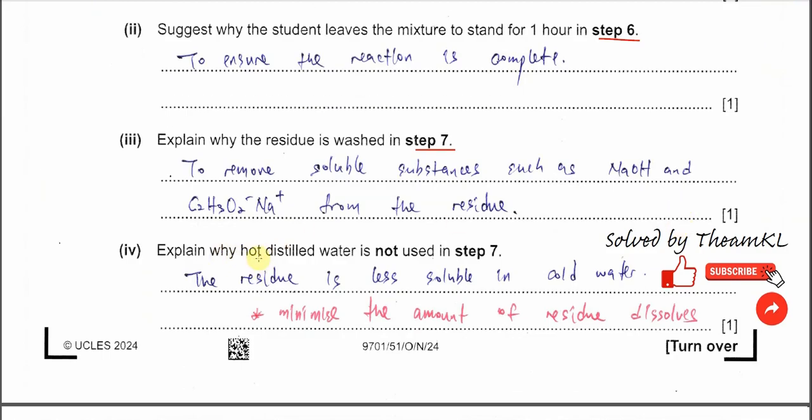Part 4, explain why hot distilled water is not used in step 7. Just now in the step it's cold distilled water. Why are we not using hot? Because if you use hot distilled water, the residue means the solid on the filter paper, it might dissolve more. Cold water or cold distilled water will reduce the solubility. The residue is less soluble in cold water, which minimizes the amount of residue that dissolves. So we will get more residue after the washing.